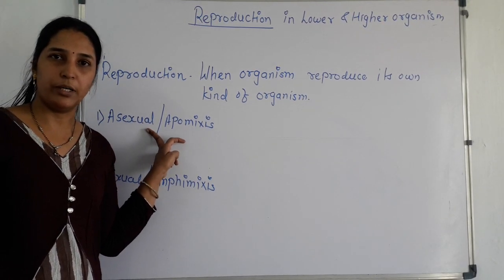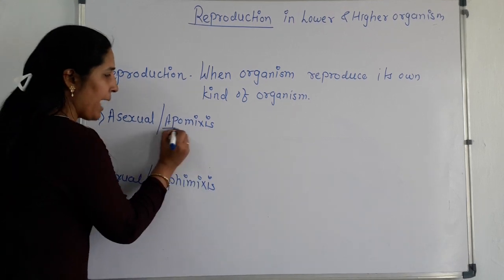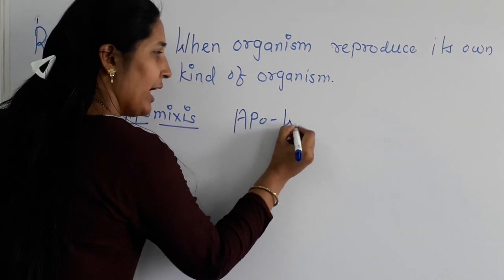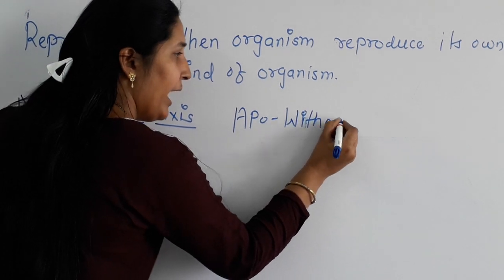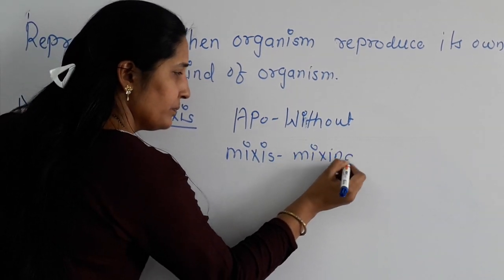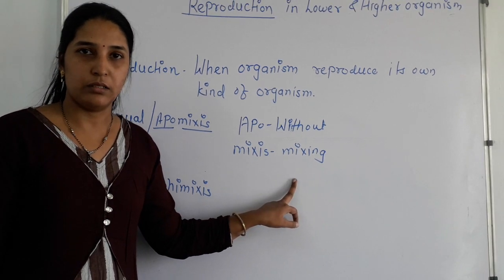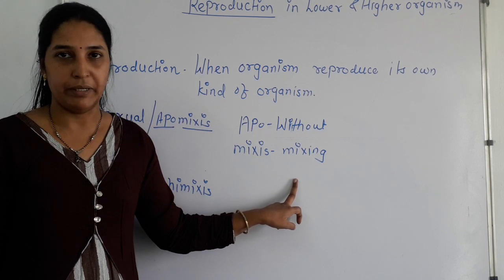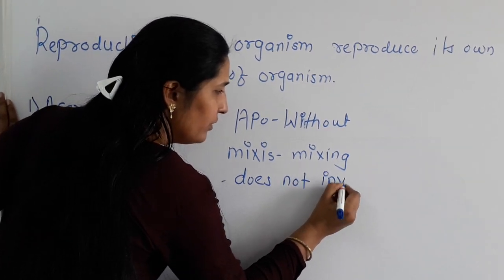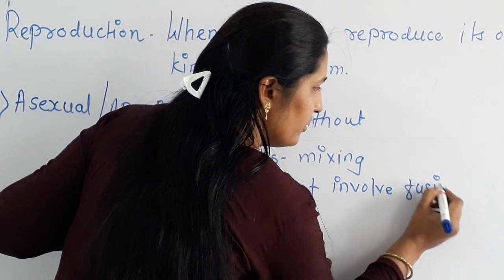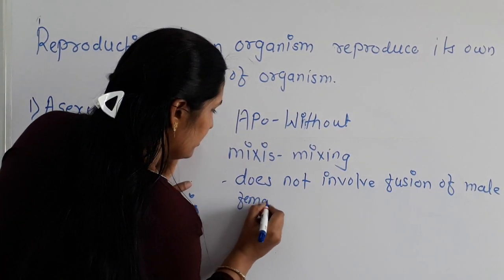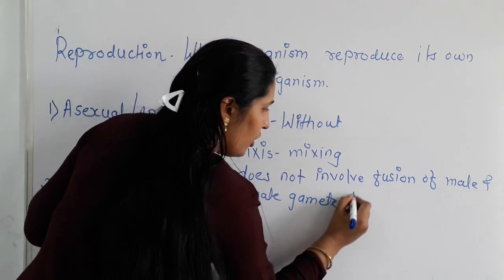First we will discuss asexual reproduction. There are two words: 'apo' and 'mixis.' Apo means without, and mixis means mixing. Asexual reproduction does not involve the fusion of male and female gametes, or the sex cells.